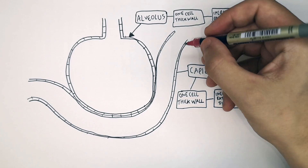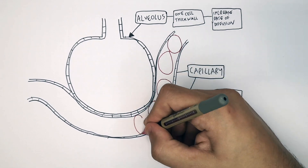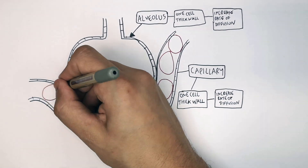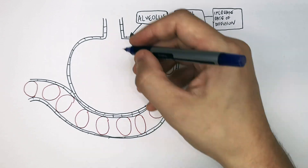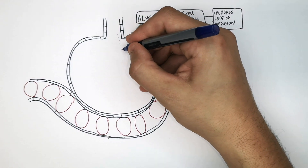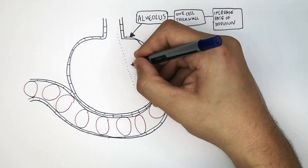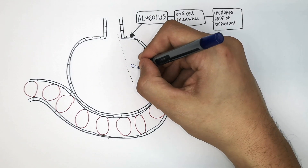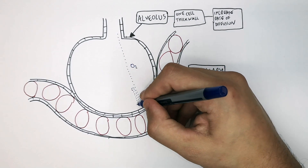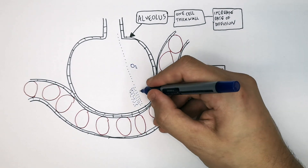I'm going to draw the red blood cells — the erythrocytes — inside the capillary. As you can see here, the capillary is one cell wide. I'm now drawing the oxygen entering the alveolus, where it will be in a high concentration.